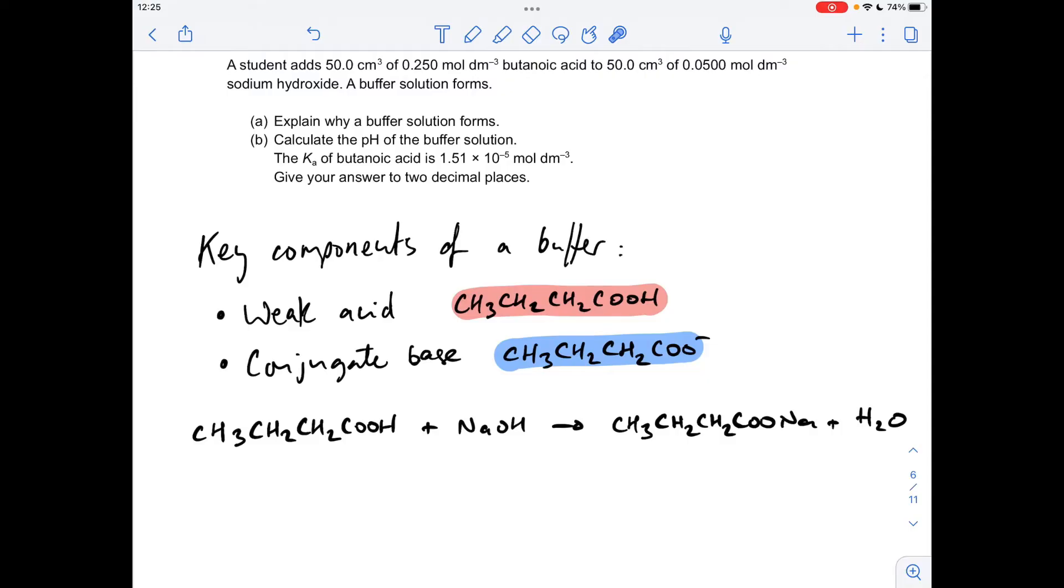Okay, so like I always do when we have questions like this, we talk about the key components of a buffer being a weak acid and the conjugate base. So the weak acid in this case is butanoic acid, and the conjugate base will be the butanoate ion. So if you think about the reaction that takes place between butanoic acid and sodium hydroxide, it's this one here. So we're making sodium butanoate and water.